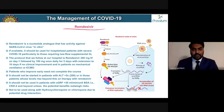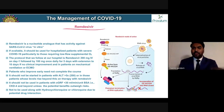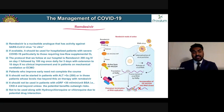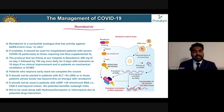The protocol at our hospital: remdesivir 200 mg loading dose IV on day one, followed by 100 mg once daily for the next five days. It can be extended to 10 days if there's no clinical improvement. Patients who improve early do not need to complete the course. It should not be started if ALT levels are more than five times the upper limit of normal, or if levels rise beyond this on therapy.